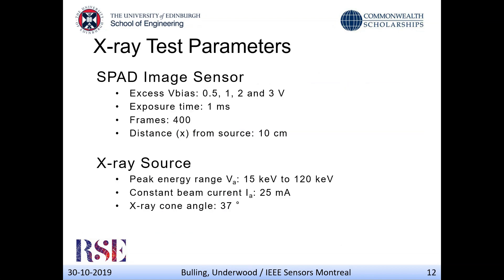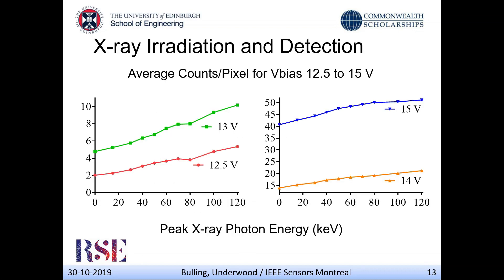With regards to the test procedure: our SPAD image sensor operates in the Geiger region, and we can push the excess bias voltage. We operated at four different biases — 0.5, 1, 2, and 3 volts — set an exposure time of one millisecond per image capture, took an average of 400 frames, and placed the device 10 centimeters from the X-ray source. The X-ray source energy was varied from 15 to 120 kV, with a constant current of 25 milliamperes. As a result of the element filter, we get a uniform distribution of photons with a cone angle of 37 degrees. We irradiated the device and, as predicted, we see a linear response — an increase in average counts as a result of an increase in peak photon energy.